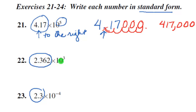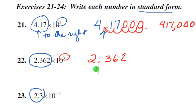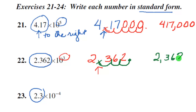Let's look at the next example. Again, we have a positive exponent, so we are going to move the decimal to the right because this scientific notation number represents a large number. Our decimal point starts right here and now we go to the right 3 slots — 1, 2, 3 — which puts the decimal right here. So this time our number in standard form is 2,362.